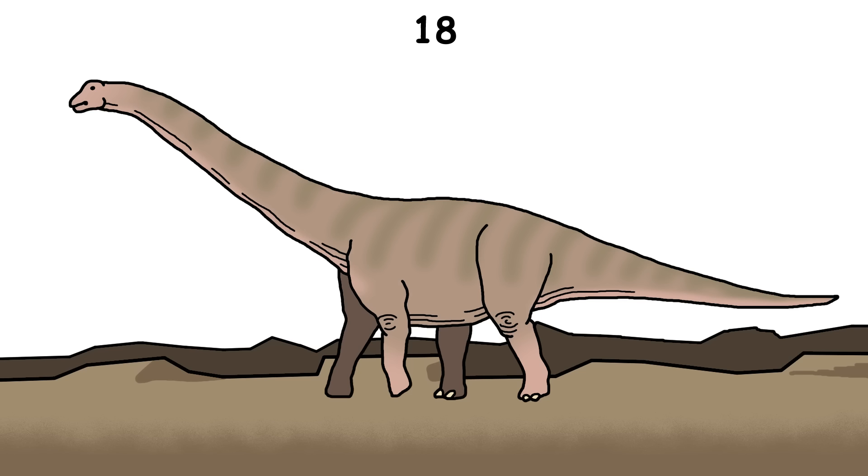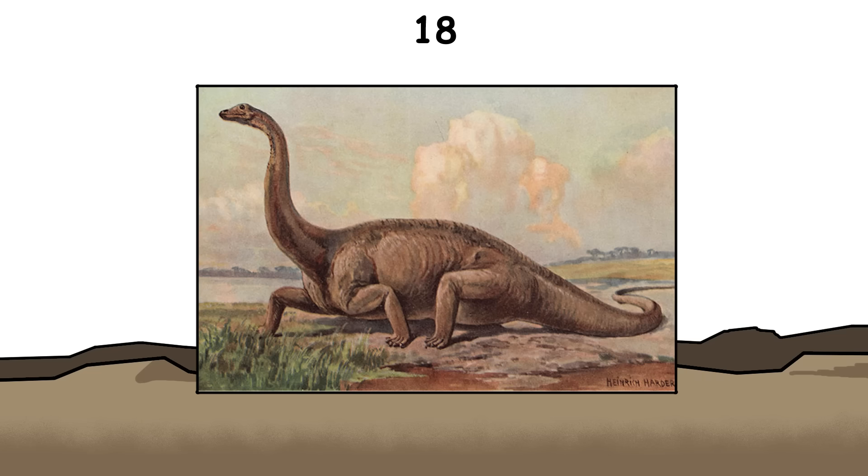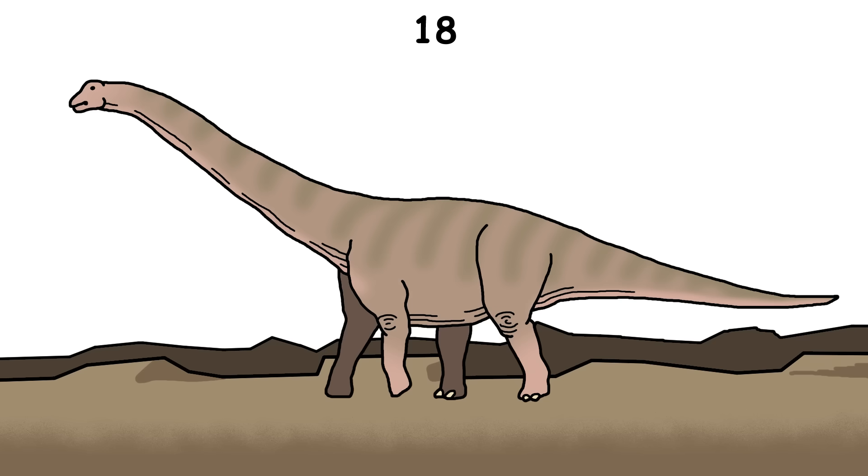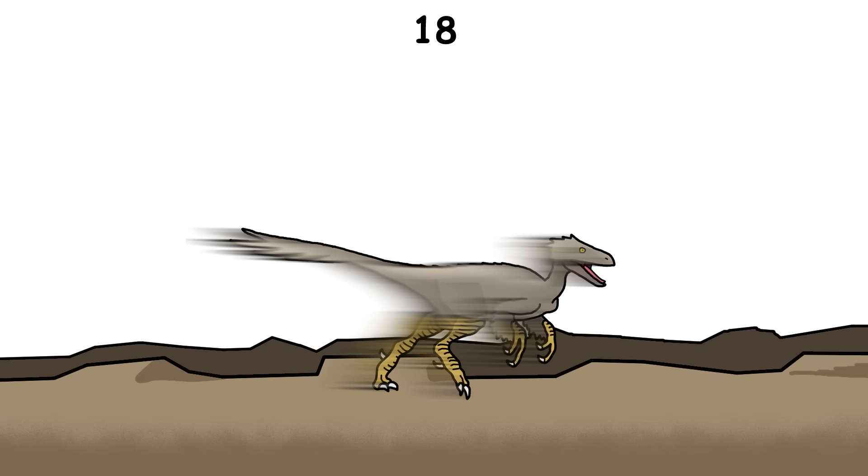In old books and movies, dinosaurs were shown dragging their tails on the ground, but we've never found fossil tracks with tail marks. That's because dinosaur tails didn't drag. They were usually held off the ground for balance. For example, velociraptors had stiff tails like carbon fiber rods to help them turn quickly while running.